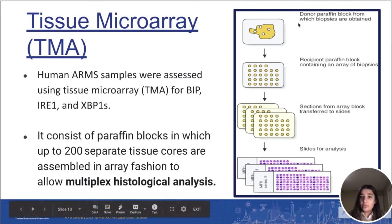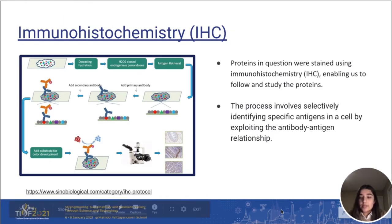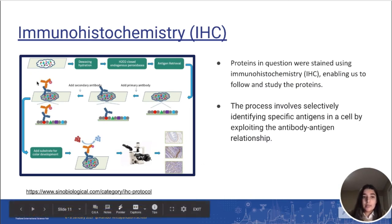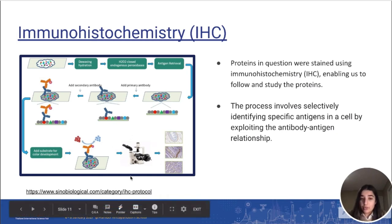As we can see in this image, we start off with donor paraffin blocks, which are then assembled into separate tissue cores, allowing us to have multiple histological analysis. We then stained the proteins in question with the help of immunohistochemistry, which enabled us to follow and study the proteins. Immunohistochemistry is a process that involves selectively identifying specific antigens in a cell by exploiting the antibody-antigen relationship. As we can see in this image, we add a secondary antibody that combines with a specific antigen, and then we add a substrate for a color to develop, which can be seen under a microscope, enabling us to easily study and follow these specific proteins.